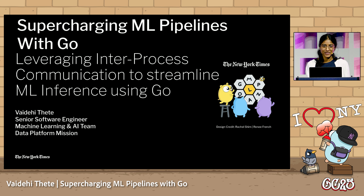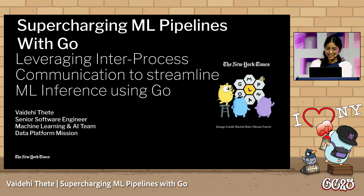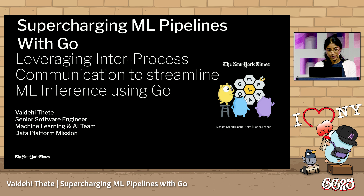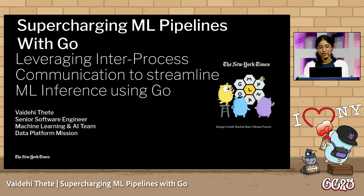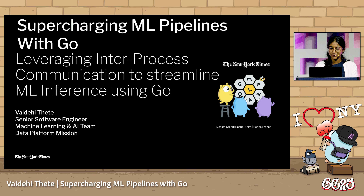Hello, everyone. I'm going to keep this short and sweet, so bear with me. My name is Vaidehi Teteh. I work at the New York Times on the machine learning and data platform team. I've been with the Times for over three years now, and today I'm going to be talking about how we used Go to augment our machine learning pipelines — specifically, how we leveraged inter-process communication to streamline machine learning inference using Go.